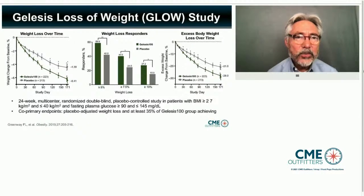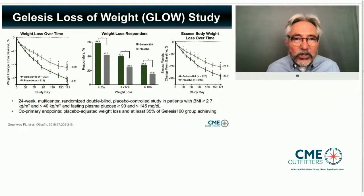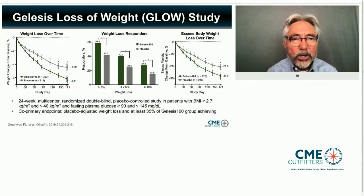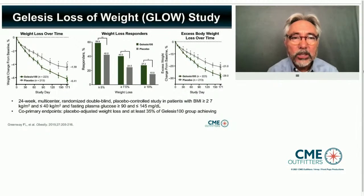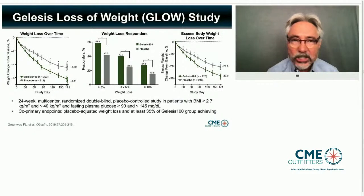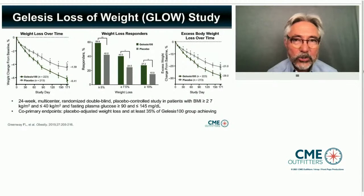The weight loss with the hydrogel device is modest. But if you follow the responder analysis — patients who lose 3% or more within two months go on to lose about 10%. The placebo group lost about 4.39% — drinking 16 ounces of water before meals does cause some weight loss. The device group loses 6.41%, which is statistically significant. Setmelanotide targets patients with a single gene mutation — about 1 in 20 morbidly obese patients. These patients have a broken MC4 receptor and never get the satiety signal. Diagnosis is via a simple oral swab test, and screening is currently being run for free.